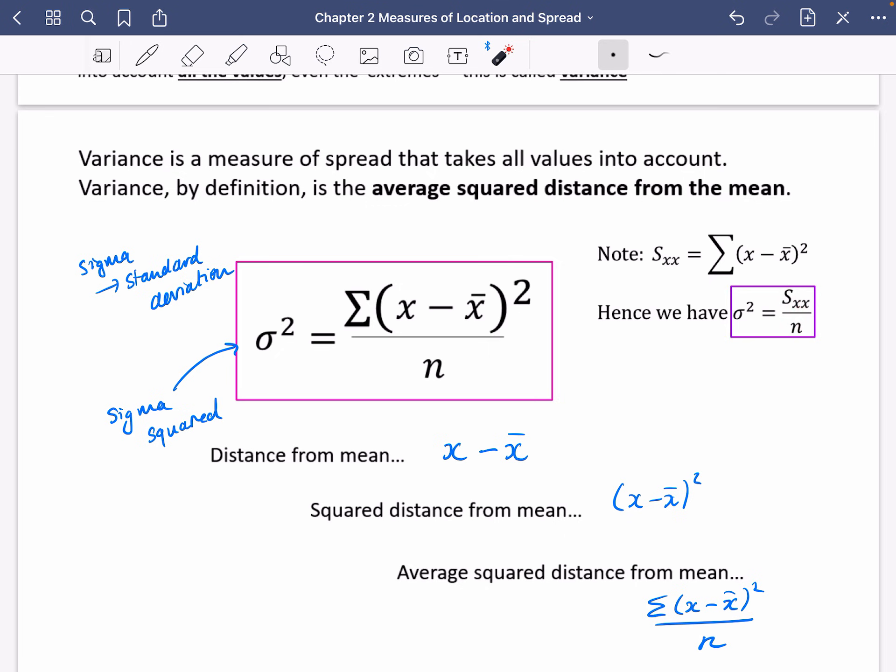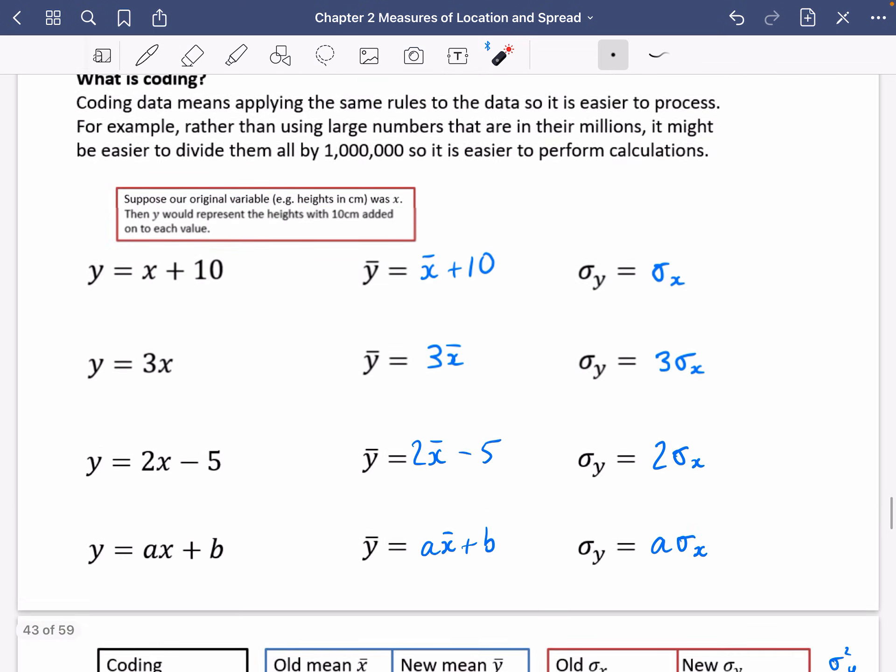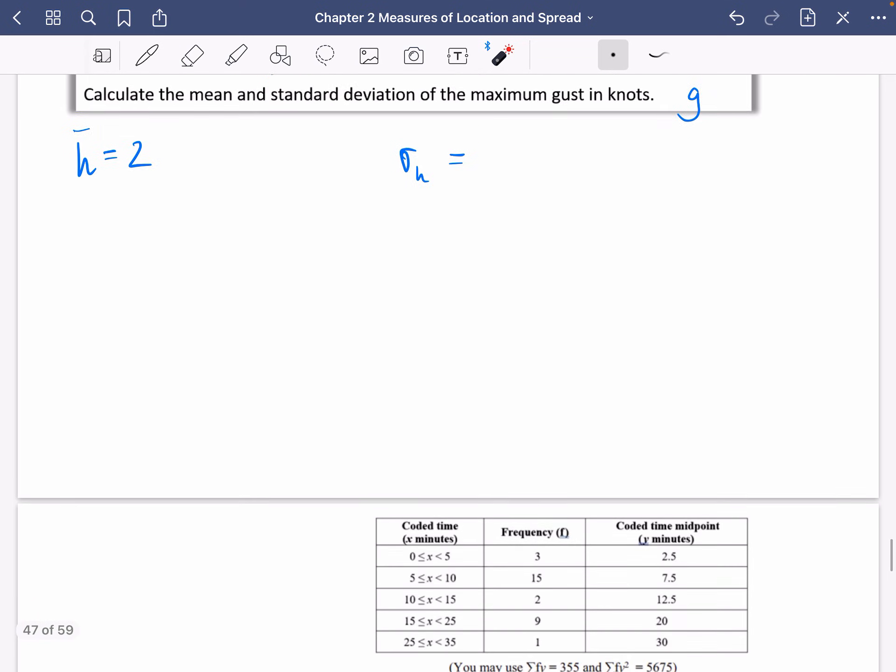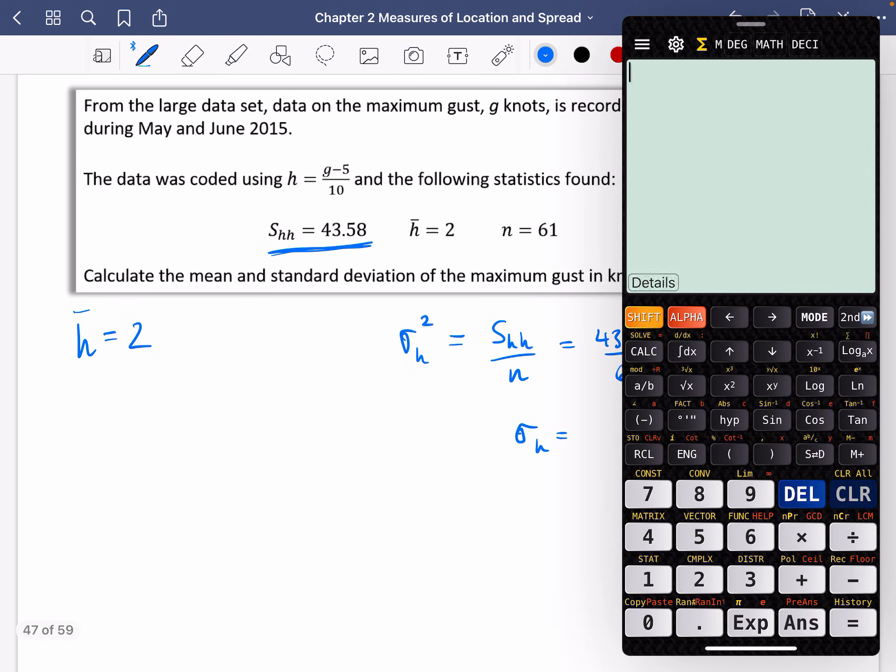Here it is. The bit I've got in the purple box. It's the SXX divided by N. And in this case, it's going to be SHH divided by N for the variance. So let's get right back down to the question. The variance is going to be SHH divided by N. So that's 43.58 divided by 61. And so the standard deviation of H will be 43.58 divided by 61. And I will square root that to get the standard deviation, which is 0.845.